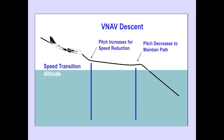During a VNAV descent, as the airplane reaches a speed transition altitude, the FMC directs pitch to increase for speed reduction. As the new speed is reached, the FMC directs a pitch change to maintain the VNAV path at the new airspeed.